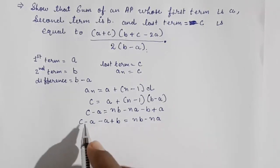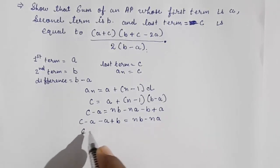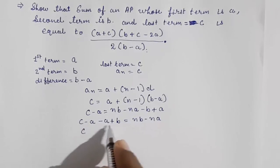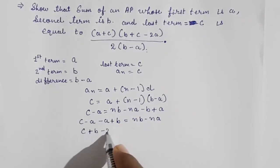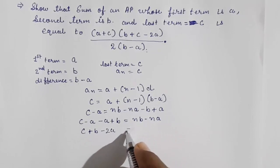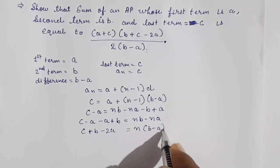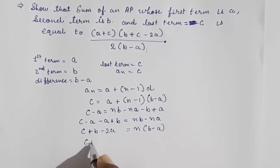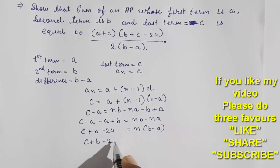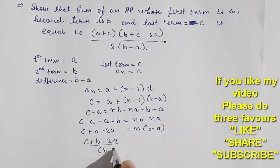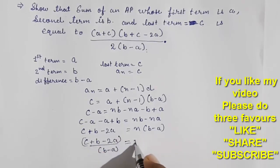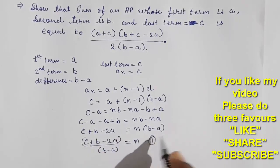We now need to find n. Collecting like terms: c minus 2a plus b equals nb minus na. Taking n as common on the right side: b plus c minus 2a upon (b minus a) equals n. Let us take this as result number one.